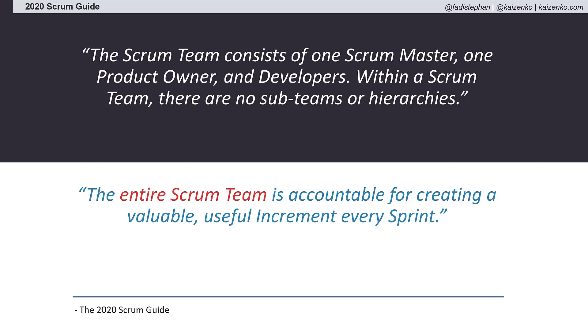Furthermore, the 2020 Scrum Guide clarifies that the entire Scrum team is accountable for creating a valuable, useful increment every sprint, and now identifies three accountabilities for the Scrum team.